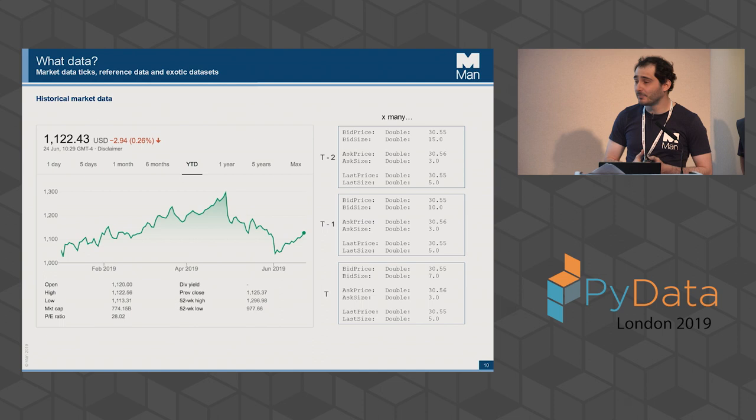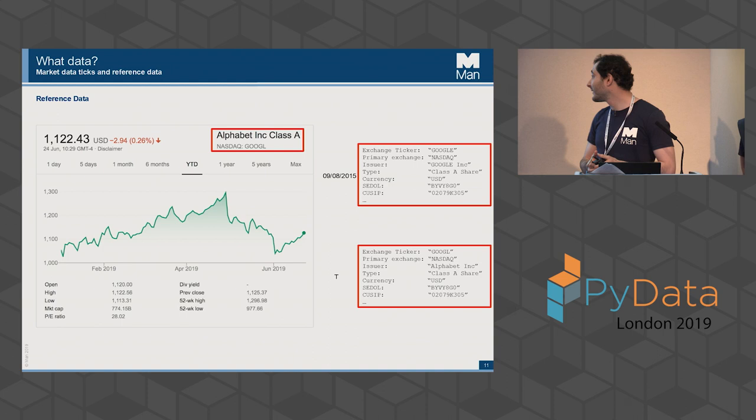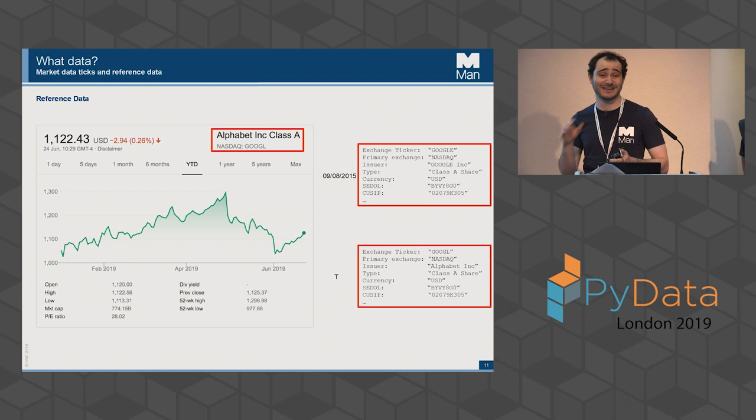Over the course of a day, across all our subscriptions, we process well over a billion ticks, and on particularly busy days it may be double that. We also care about what we call reference data — effectively just metadata for the time series. For example, the fact that a time series refers to Alphabet Inc. Class A stock, that it's traded on the NASDAQ, that the issuer is Alphabet Inc., that it's US dollar denominated, and identifiers like SEDOL and CUSIP. This reference data is really important — without it, we have absolutely no idea what price data we're looking at.